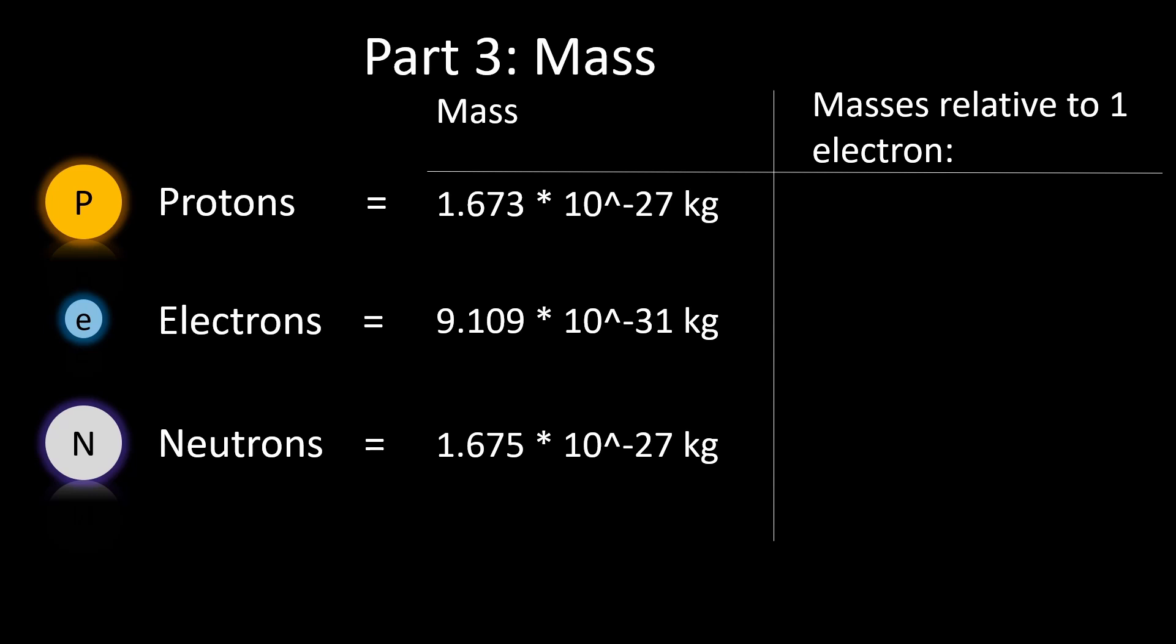This means that the relative masses of each particle compared to that of an electron are as follows: for a proton, it's approximately 1,836 times the mass of an electron; for a neutron, it's approximately 1,839 times the mass of an electron.